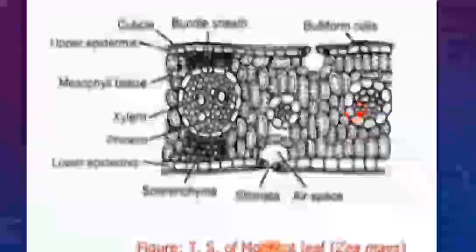These are the main characteristics and diagnostic features of the isobilateral leaf. The key difference from the dorsal ventral leaf is that the isobilateral leaf's two surfaces both face the sun and are equally green. Thank you, dear students. We will meet next time.